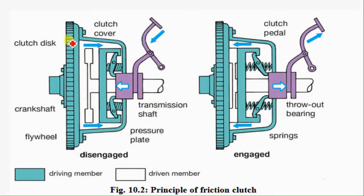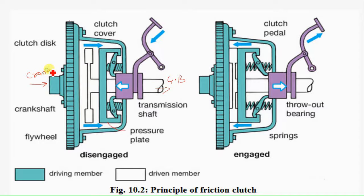This one is the engine, this one is the flywheel, and this one is the clutch cover. This one is the pressure plate, and this one is the transmission shaft going to the gearbox. This one is the engine shaft, and this one is the friction plate. When we press the pedal, the friction plates are disconnected from the pressure plate as well as the flywheel — meaning there is no power being transferred.